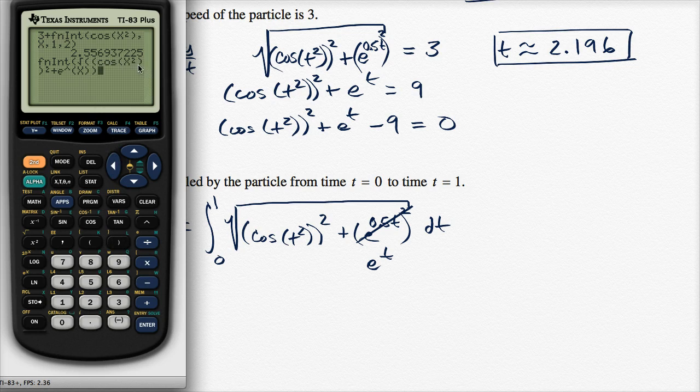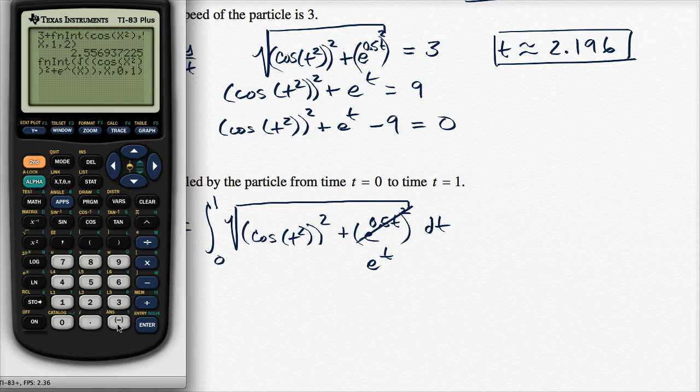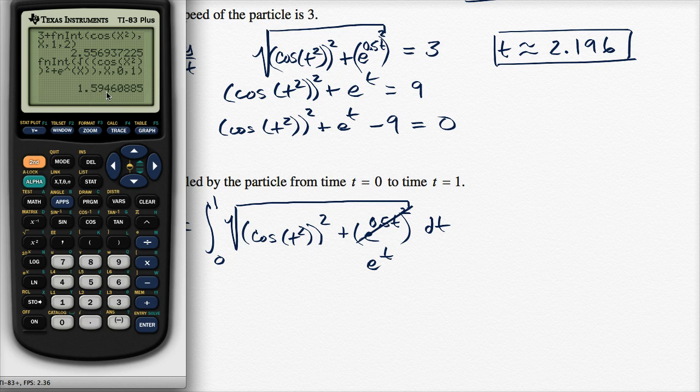See, did I do that right? This closes around the x squared, that closes with that. Yep, okay, that looks right. And then my variable of integration is x, and I'm integrating from 0 to 1, and now let's let the calculator munch on it a little bit, and I get approximately 1.595.